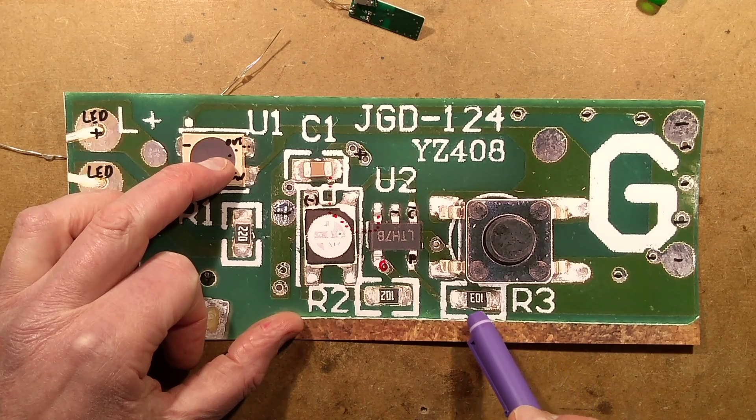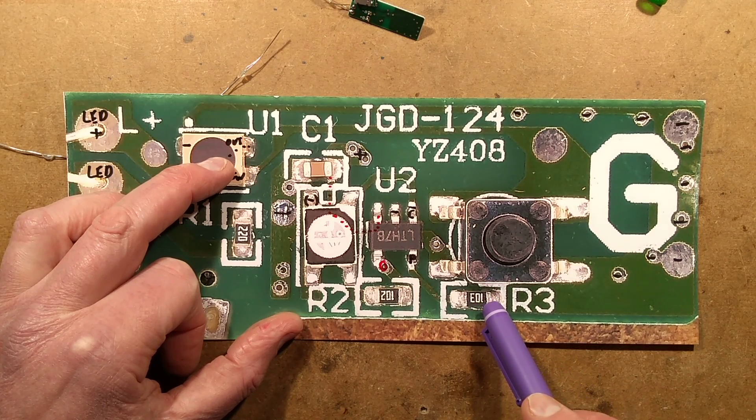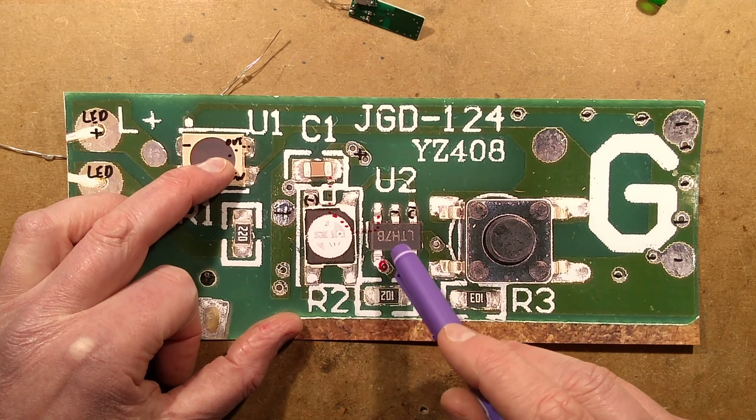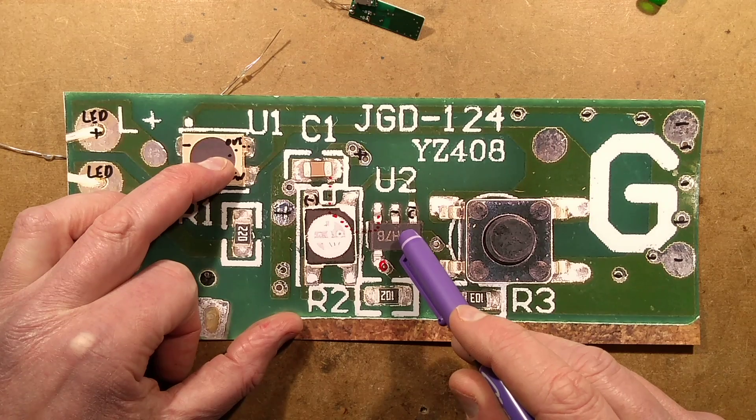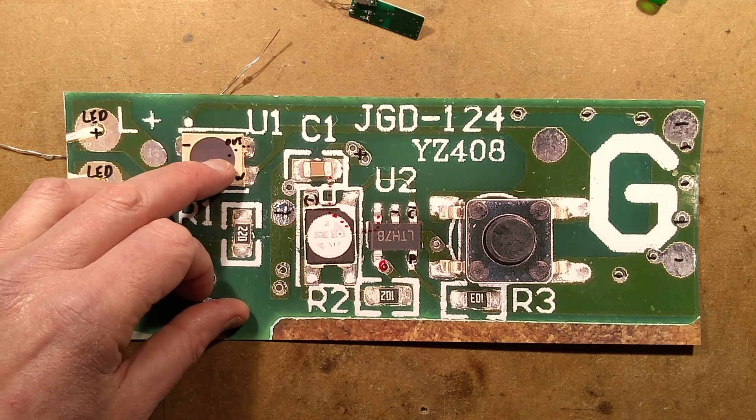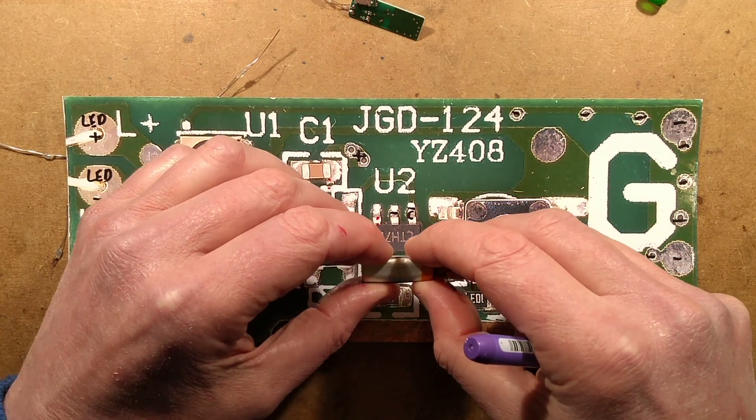The only other resistor after that is this 103. That's 1030, so that's 10K, and it's going to the programming pin of this, because this little LTH7B is the charge control chip. So let's take a look at the schematic. The lithium cell dimensions are roughly 5mm thick, 11mm wide by 30mm long.